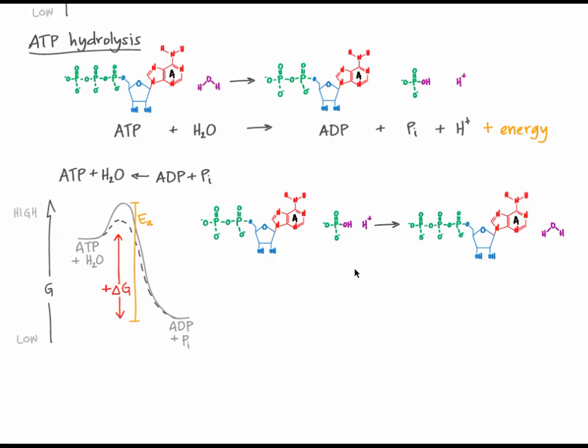This reverse process, the synthesis of ATP, is also achieved through coupled reactions, using the food we eat as the energy source. The covalent bonds between molecules of food store energy. Cellular metabolism is the process in which those bonds are broken, releasing energy that can be harnessed to form ATP.